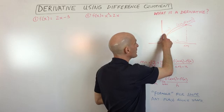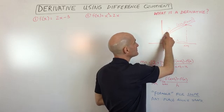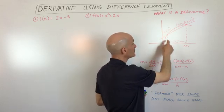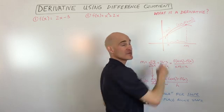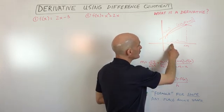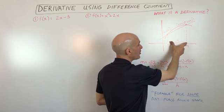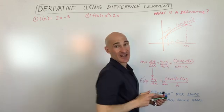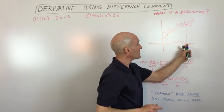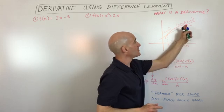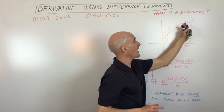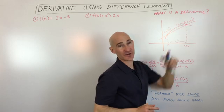I'm going to label this first point x, f of x — meaning if I put the x value into the function f, out comes the output f of x. If I go a little bit further to the right, we'll call that distance h. Now I'm at x plus h, and if I go up to the graph, my output is f of x plus h.